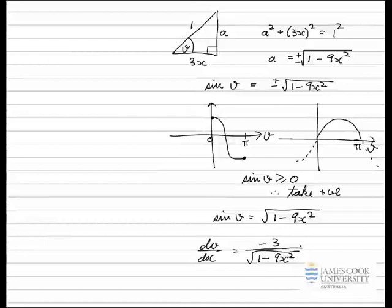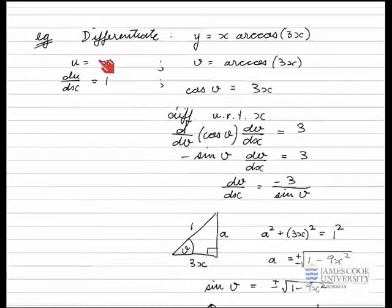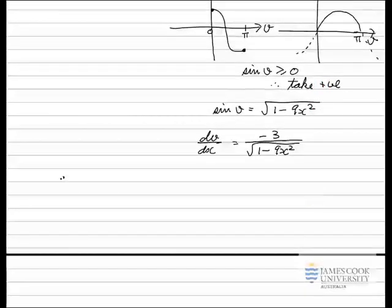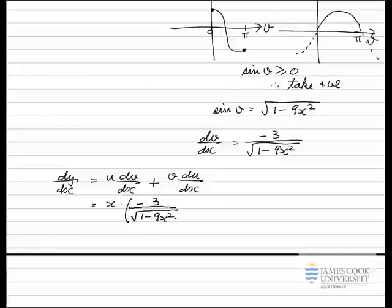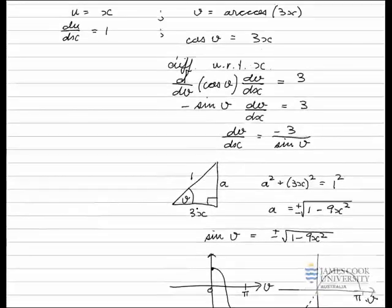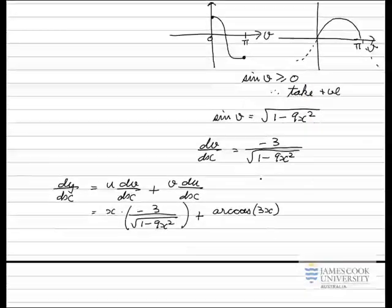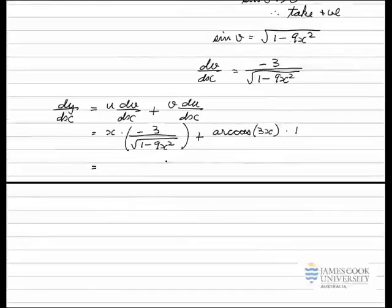We have an expression for dv/dx and v and u and du/dx. So to differentiate our product right up the top, we can state the product rule and substitute all our values in. dy/dx, using our product rule now - and let's state the product rule - u times dv/dx plus v times du/dx. We substitute in the values that we have. u was just equal to x. dv/dx is negative 3 divided by the square root 1 minus 9x squared. v, going back up to the top, was our inverse trig function, v is arccos of 3x. And du/dx, the derivative of u, is just 1. We've got multiplied by 1 in here.